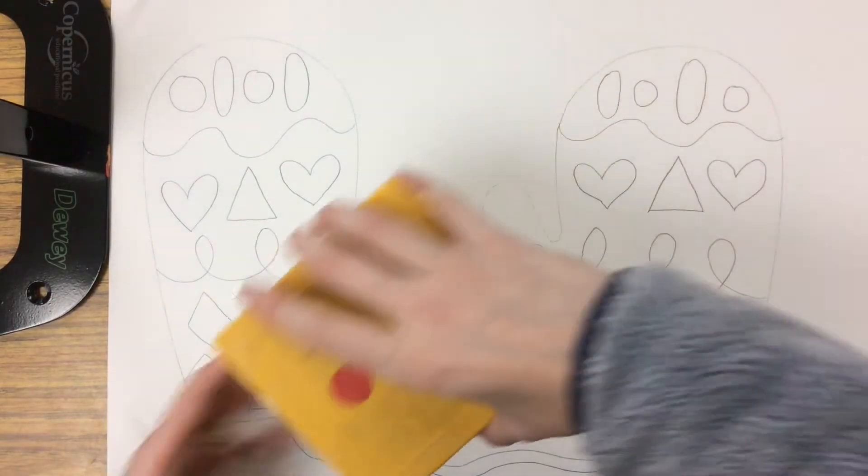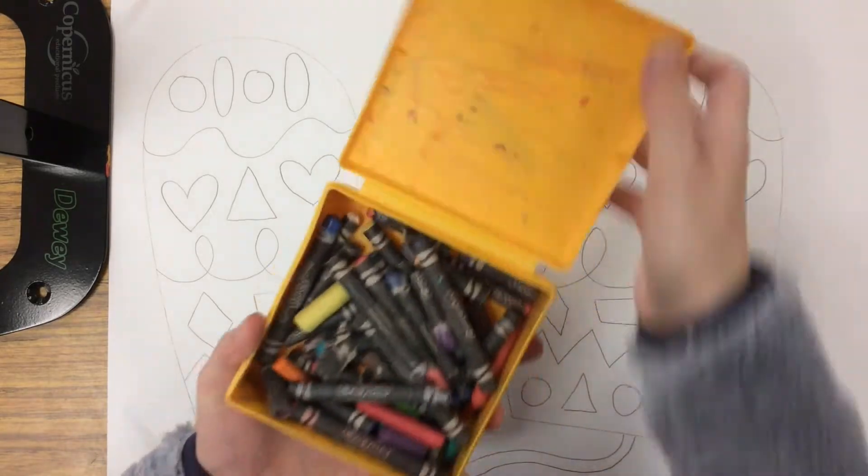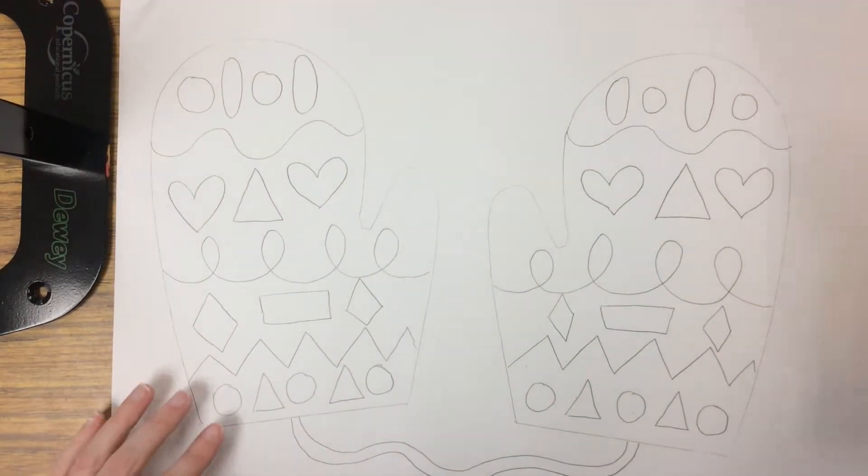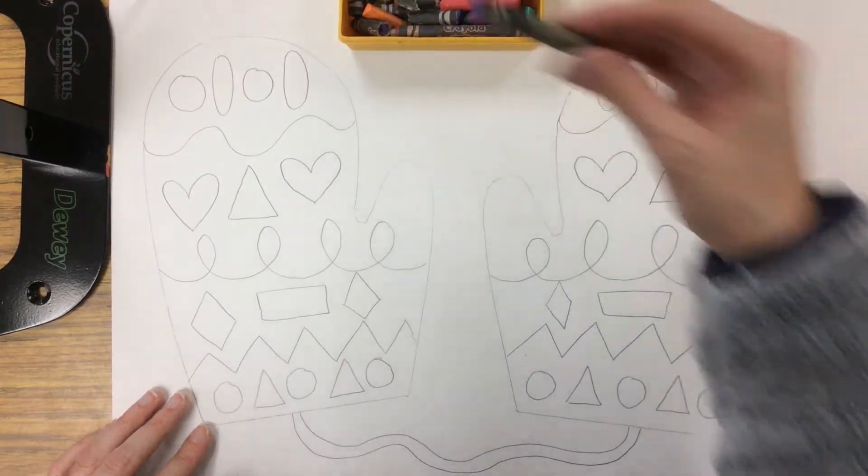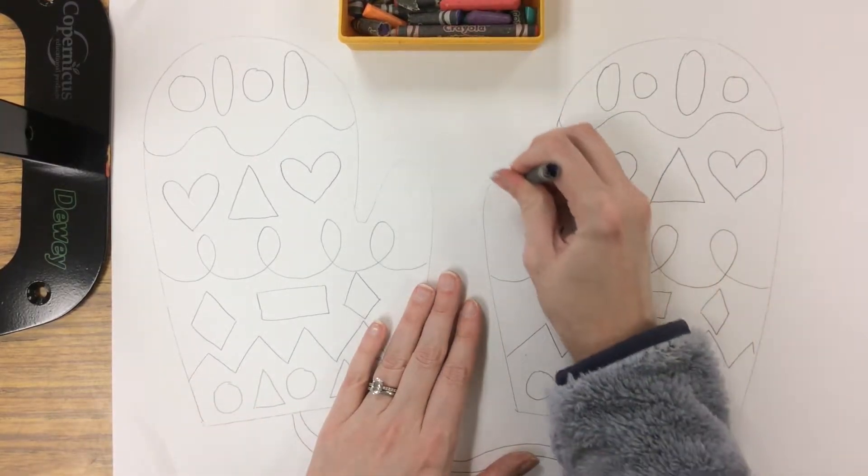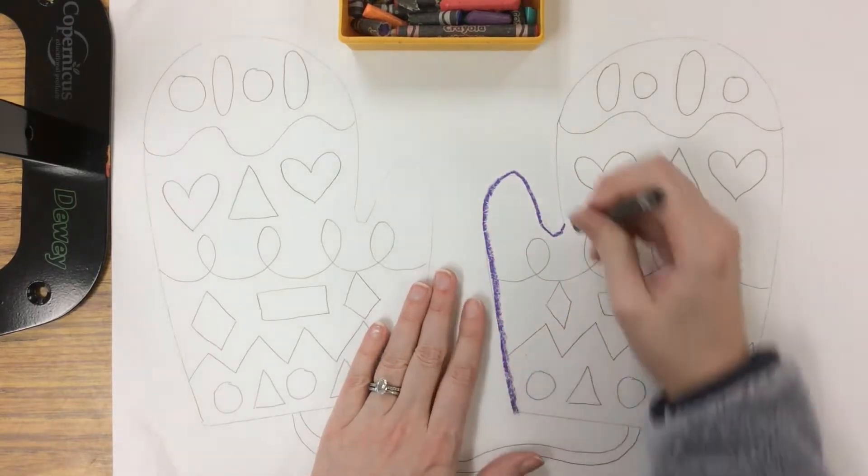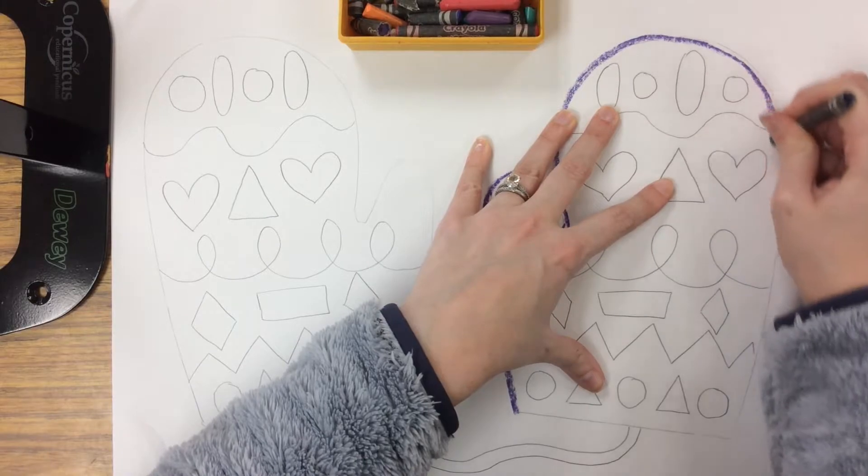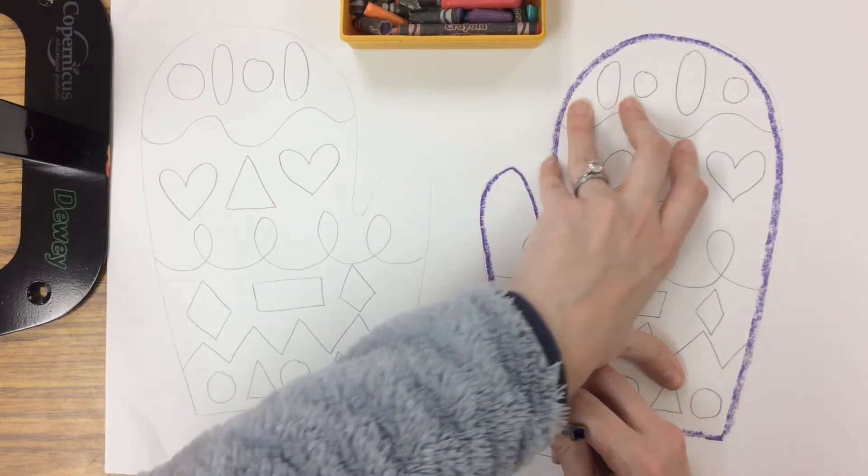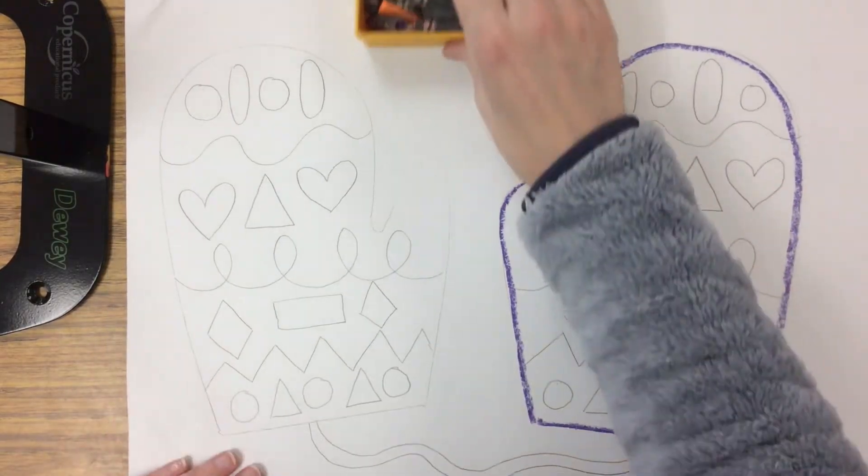When I'm done with pencil, I'm going to take construction paper crayons and trace all of my designs. But I'm not going to color them in because I will be painting them after my crayon. And I want to use symmetrical colors when I trace. So if I trace my right mitten with purple, I need to trace my left mitten with purple.